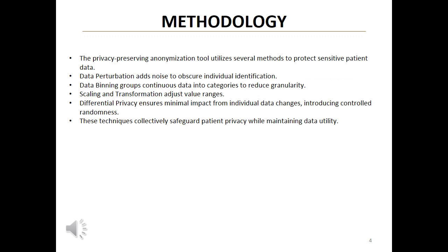The privacy-preserving anonymization tool utilizes several methods to protect sensitive patient data. Data perturbation adds noise to obscure individual identification. Data binning groups continuous data into categories to reduce granularity. Scaling and transformation adjust value ranges. Differential privacy ensures minimal impact from individual data changes, introducing controlled randomness. These techniques collectively safeguard patient privacy while maintaining data utility.